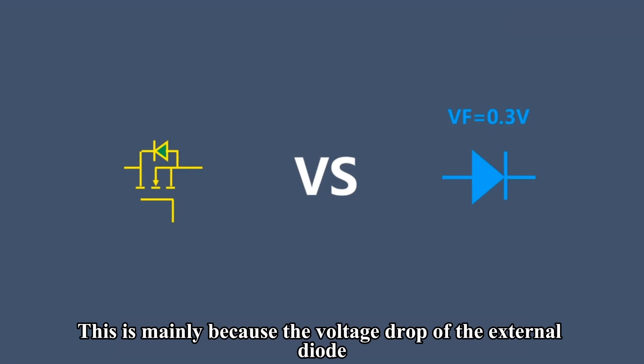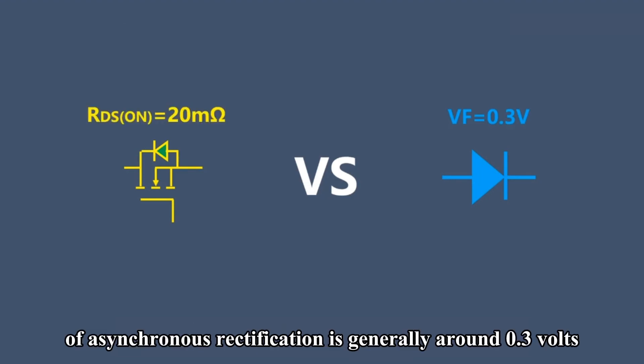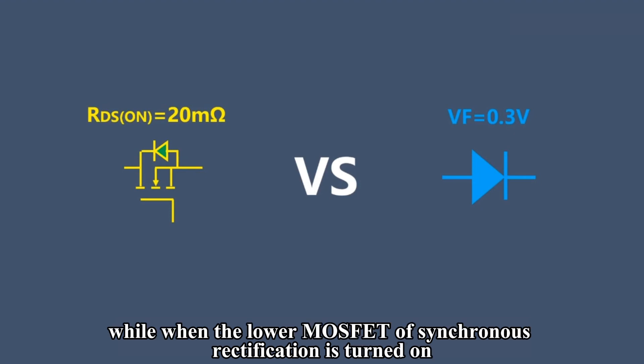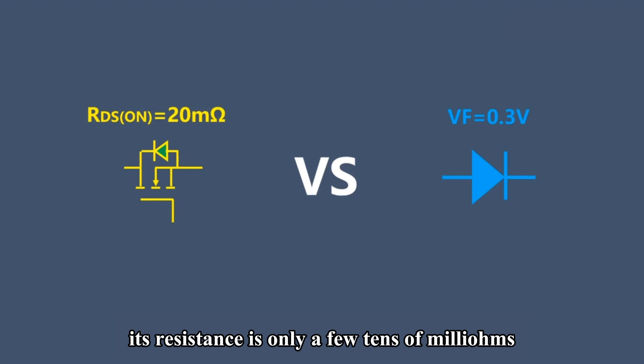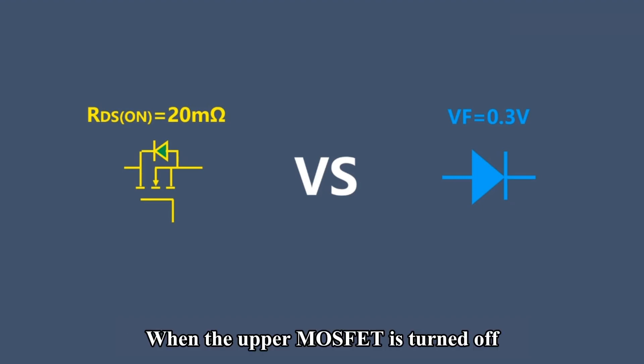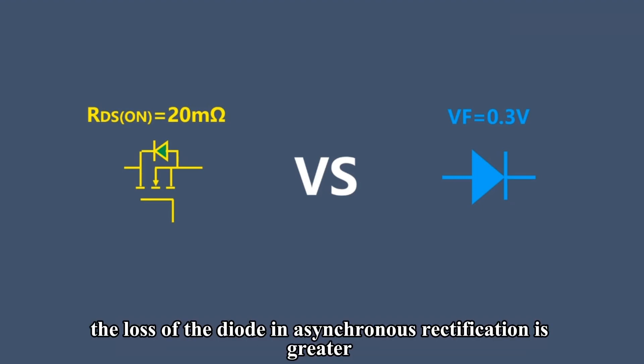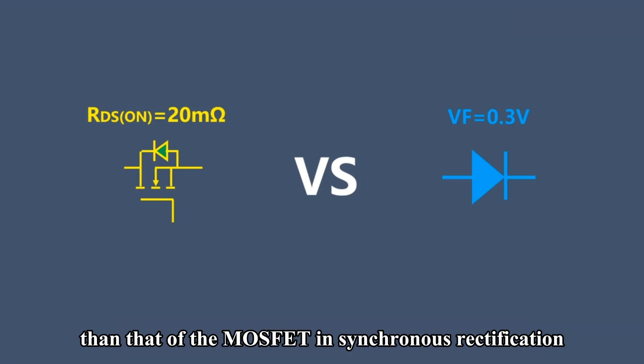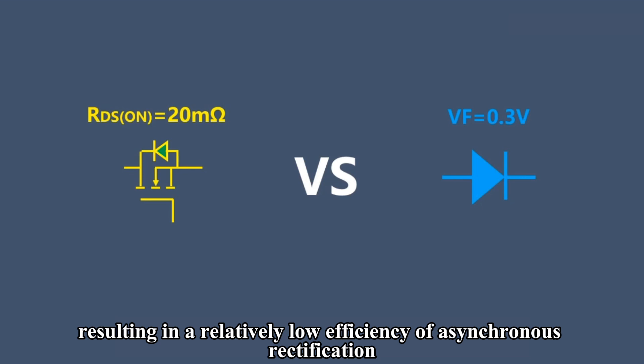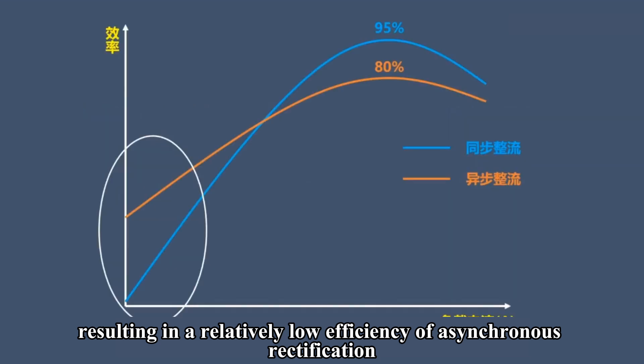This is mainly because the voltage drop of the external diode of asynchronous rectification is generally around 0.3 volts, while when the lower MOSFET of synchronous rectification is turned on, its resistance is only a few tens of milliohms. When the upper MOSFET is turned off, the loss of the diode in asynchronous rectification is greater than that of the MOSFET in synchronous rectification, resulting in a relatively low efficiency of asynchronous rectification.